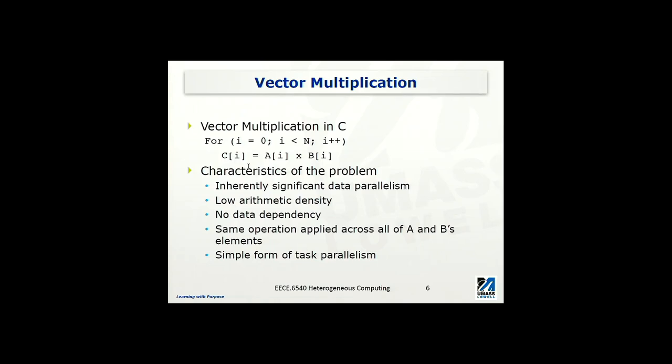First, this is inherently significant data parallelism. Because for every multiplication, all of these N multiplications, they are all independent. So the multiplication of A1 with B1 is independent from the multiplication of A2 and B2. So this is very nice, and that gives us an opportunity to carry out these multiplications in parallel.